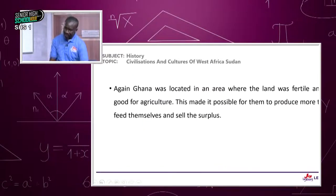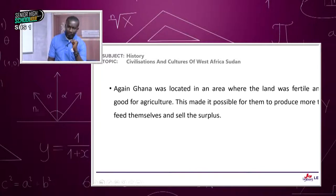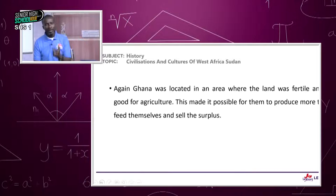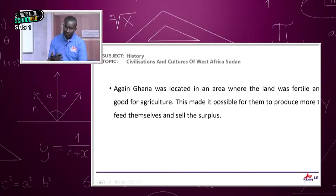In your screen is the city of Kumbi Saleh, which was strategically located — you can see the structures a little in ruins but well-built, showing that wealthy people lived there because of the numerous businesses that took place. Ghana was also located in an area where the land was fertile, and this was good for agriculture.